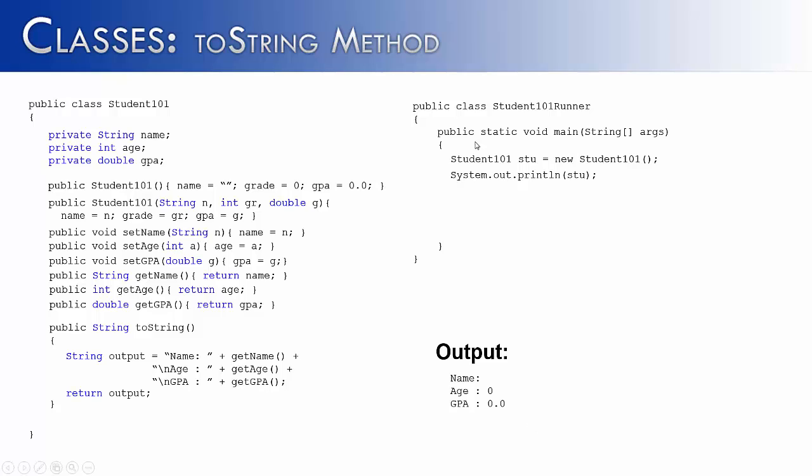So instead of saying I lost my marbles, what it would say is name, age, and GPA. Well, why is the name empty? That's because when I used this constructor, name was set to empty quotes, grade to zero, and GPA to 0.0. But what's important here is to understand that when you print out the object, it's going to call this toString method and print out what's inside. And in this case, we get an output that looks like this.